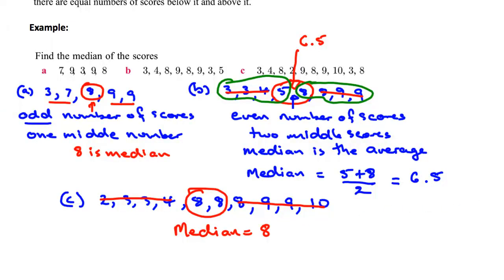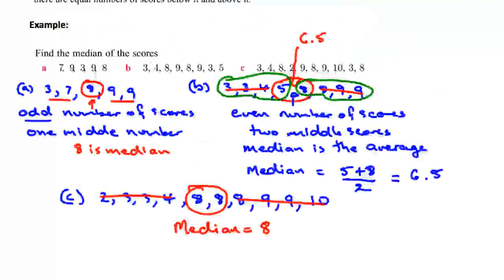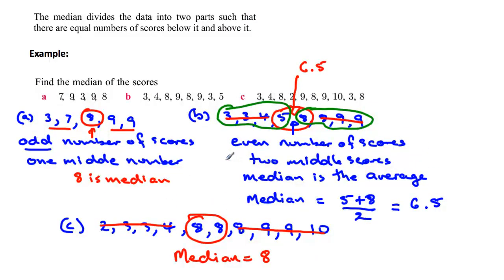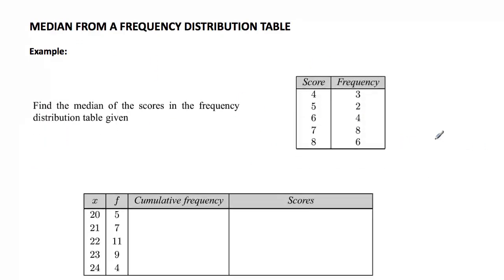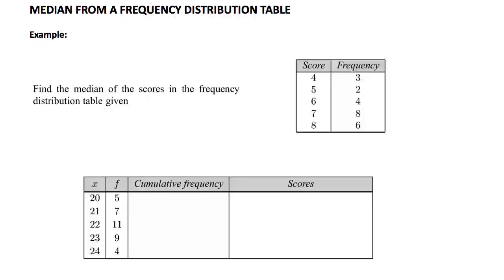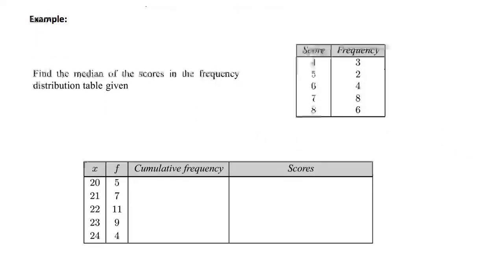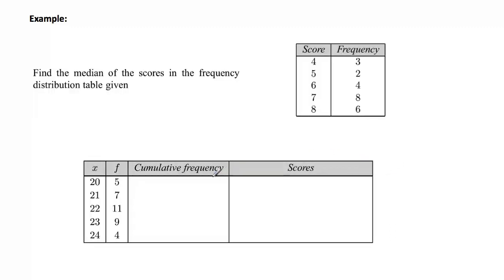That's the median and how to calculate it when given a list of numbers. But what about when you have a frequency table? Let's have a look at what happens when you've got a frequency distribution table. We're going to work out the median for this one here. The secret to this is to actually draw what we call a cumulative frequency column.